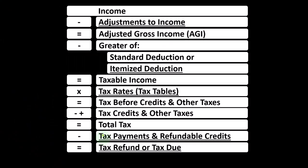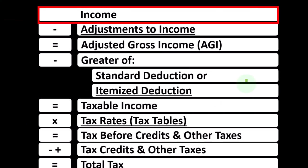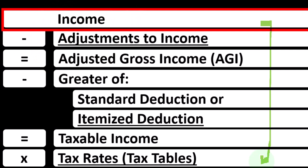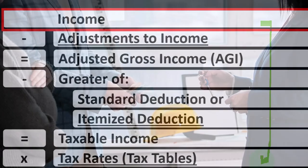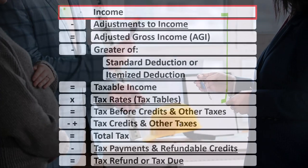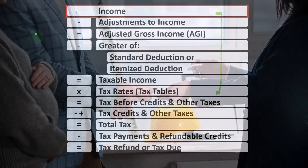Looking at the income tax formula, we're focused on line one income. The first half of the income tax formula is essentially an income statement — just an outline — with other forms and schedules flowing into these line items. One of those is Schedule E, which is in essence an income statement with rental income minus rental expenses, and the net rental income flows into line one income of Form 1040.